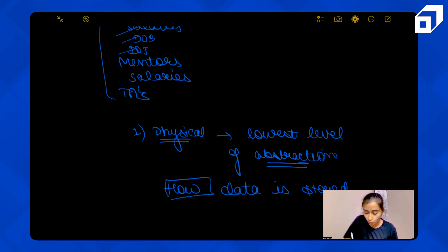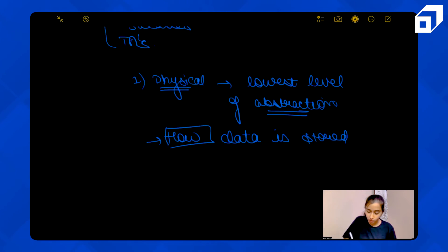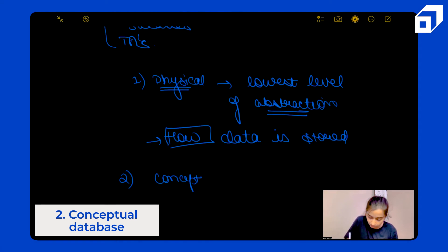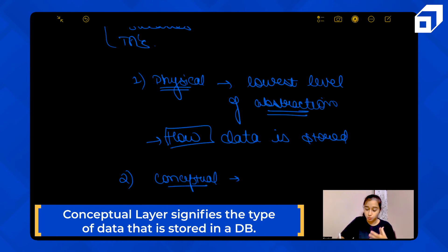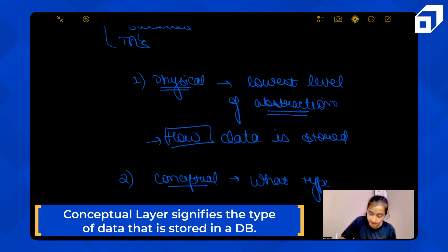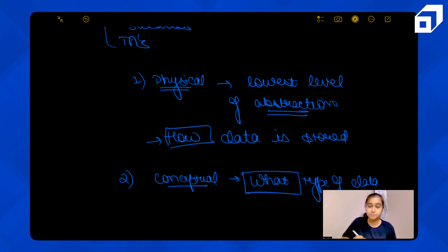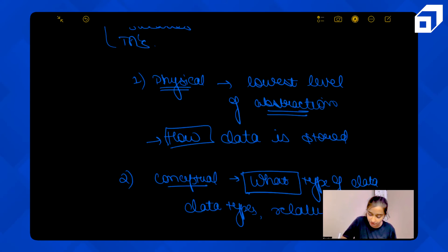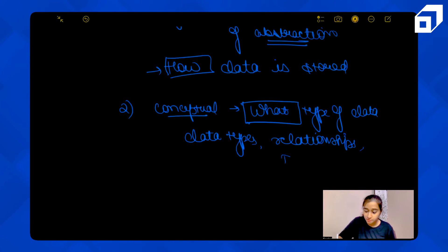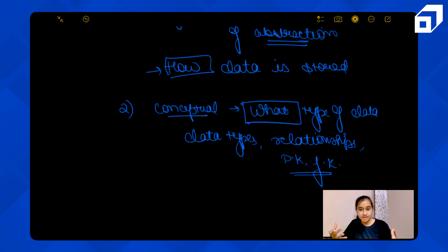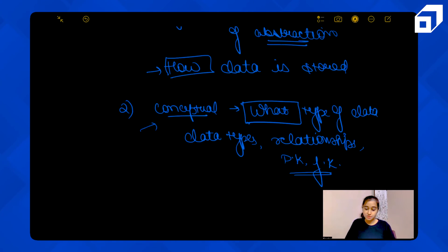The second level is the conceptual level. The conceptual level describes what type of data is stored — data types, relationships between different tables, integrity constraints, primary keys, foreign keys. So it covers all the relationships and data types: the information about what data is being stored at the conceptual level.